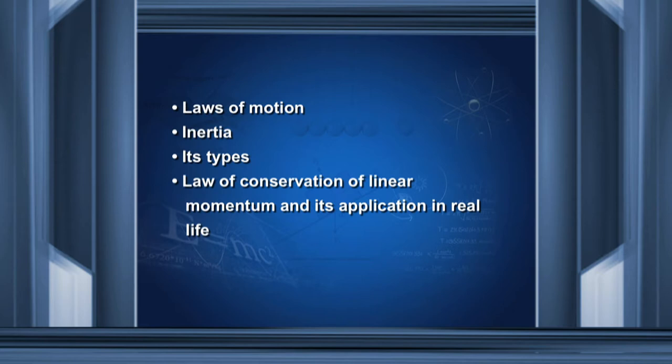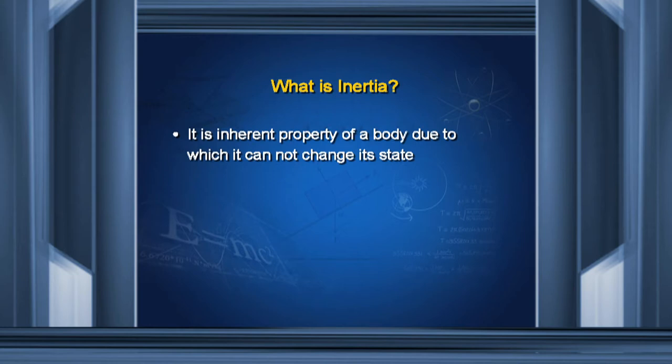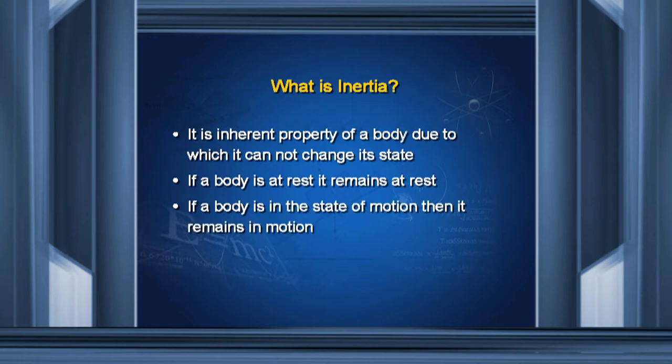We will start from inertia. Let us observe objects around us — can this TV set in your room move on its own? Can any other object in your surroundings change its state? The answer is no. The reason is inertia. Inertia is the inherent property of a body due to which it cannot change its state — if a body is at rest it remains at rest, if it is in motion it remains in motion. Inertia is measured in terms of mass: more mass means more inertia.